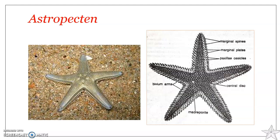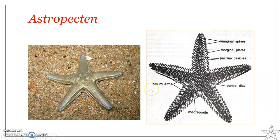The two arms between which the madreporite is located are referred to as the bivium, while the remaining three arms together are known as the trivium. The body wall is thin, soft, and almost transparent, supported by numerous calcareous plates known as dermal ossicles. In Astropecten, the sexes are separate, and sexual dimorphism is very rarely observed.